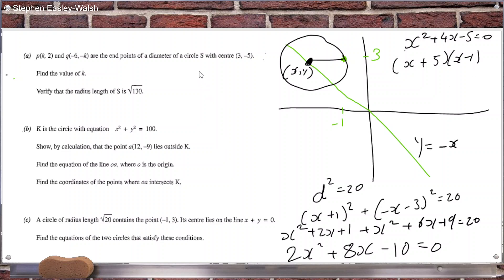It's x squared plus four x minus five equals zero. So that's x plus five x minus one.